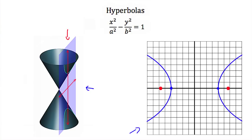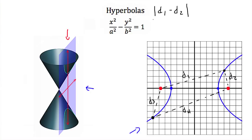For example, if I chose a point on my hyperbola and measured the distance from that point to both foci — calling them distance one and distance two — and then chose a different point on the hyperbola and measured its distances to both foci, calling them distance three and distance four, then the absolute value of distance one minus distance two equals the absolute value of distance three minus distance four.